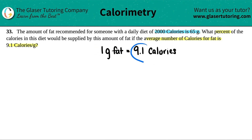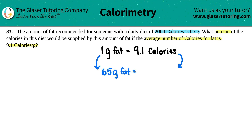If one gram of fat is 9.1 calories, how many calories is 65 grams of fat? We could do this as dimensional analysis or a lot of different ways. How did I go from 1 gram of fat to 65? I just multiplied by 65. So whatever you do on one side, you do on the other. I'm going to take the 9.1 calories and multiply it by 65, and I get 591.5 calories.